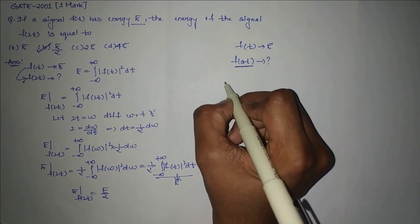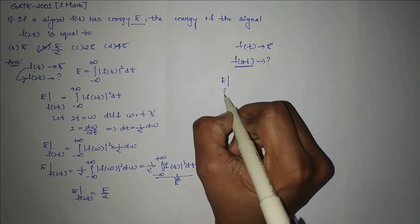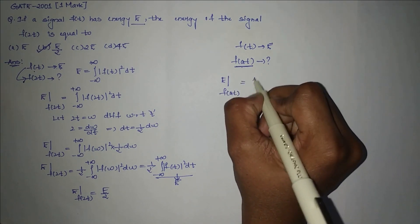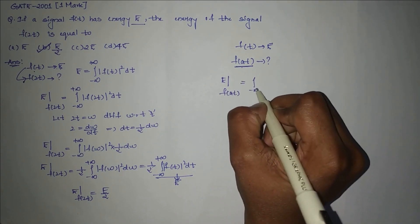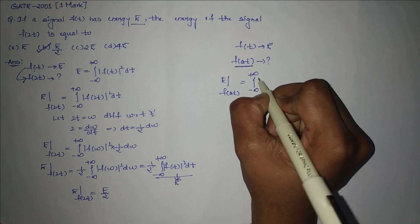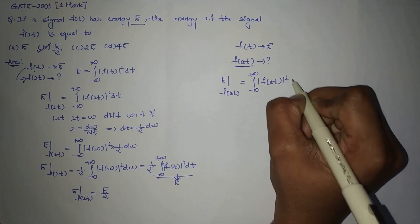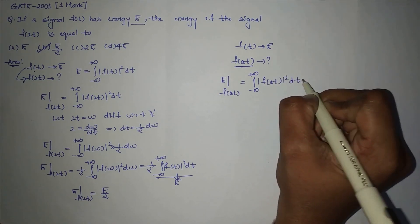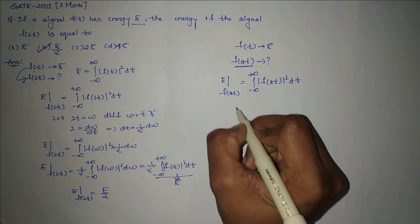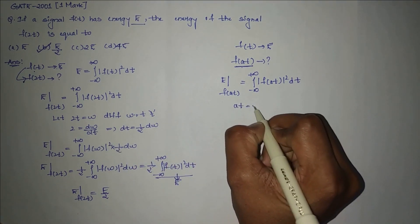The energy of signal f(at) equals integration from minus infinity to plus infinity of mod f(at) whole square dt. Let us take at equal to W.